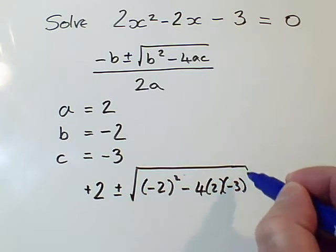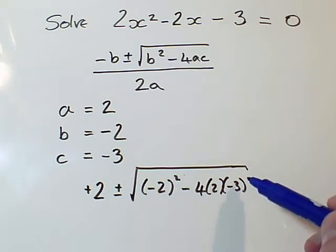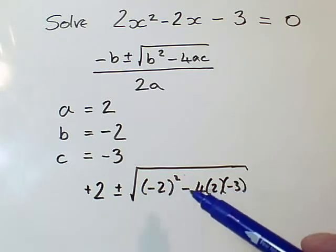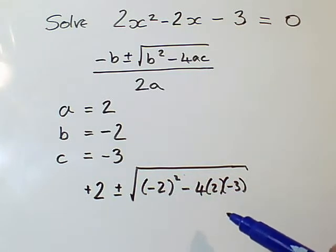And notice what I've done with the brackets there. First of all, notice the square root goes across everything. That's really important. And for these multiplications, which may have negative numbers in, I recommend putting everything in brackets, because then you'll be able to deal with the minus signs correctly.